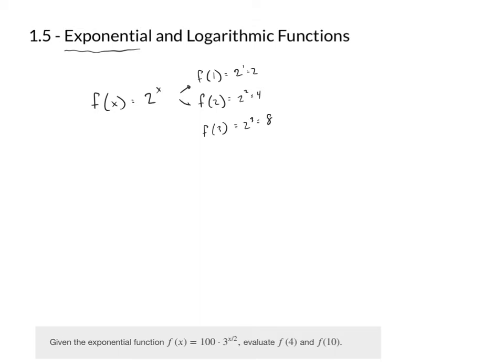We can recognize the pattern: 2, 4, 8, 16, 32, 64, 128, 256, 512, 1028, and so on. We can evaluate it for any real number — we could look at f(1.1), f(π), 2 to the pi-th power. We can have irrational values in there.